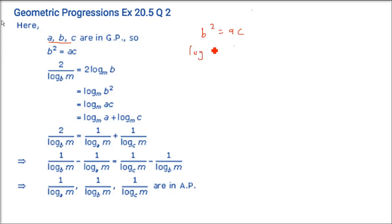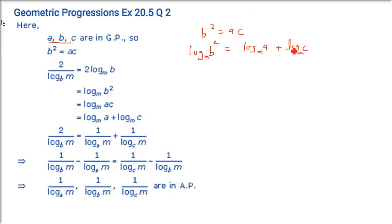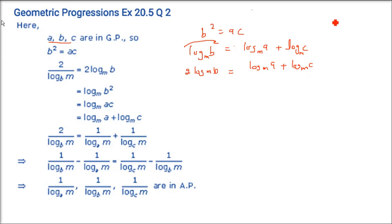Now let us take log. log B² = log A + log C. Now we are taking base M — equal base you can take. The base is M. Now this two comes to the front. log base M of B, and log all base is M. Now log_M A and log_M C.